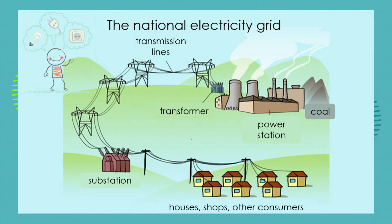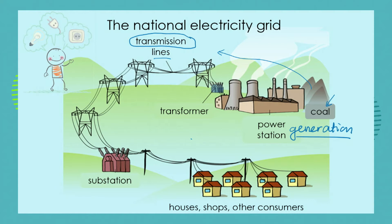In our last lesson, we examined the national electricity grid. We saw that coal, which is a form of potential chemical energy, is transferred into electrical energy. The transformation or generation of electricity happens at the power station. The electricity is then transmitted from the power station to substations, where it is distributed to many different consumers — maybe you in your house, your shops, your schools, hospitals, and different factories.